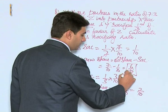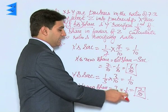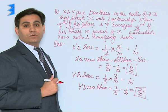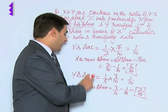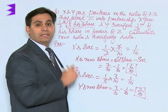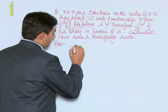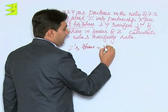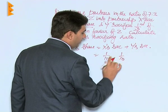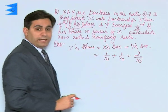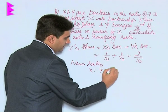The new share of X is 6/10 and the new share of Y is 2/10. Z's share is not given, but Z's share would naturally be equal to the sacrifice made by X plus the sacrifice made by Y in his favor. So Z's share = X's sacrifice + Y's sacrifice = 1/10 + 1/10 = 2/10.